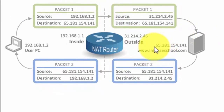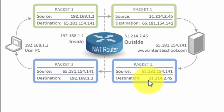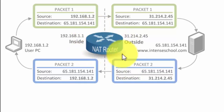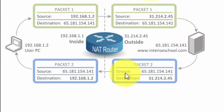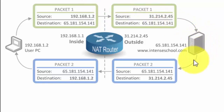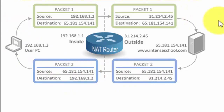The packet finally gets to its destination at 65.181.154.141 and reaches the website. The website returns information addressed to 31.214.2.45, which is the public IP address given to you by your ISP. Then NAT does the reverse translation — it takes the public destination address out, puts back the private IP address of the originating PC, and the packet goes to the PC. It simply removes the private IP address outbound, reinserts a public IP address, and as information returns it does just the opposite, putting the correct private IP back so web surfing goes very smoothly.